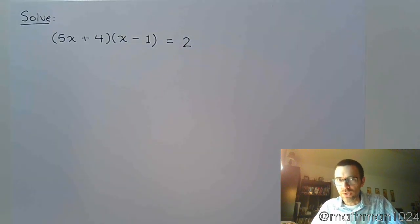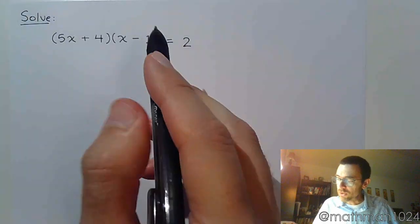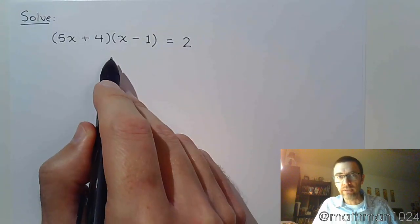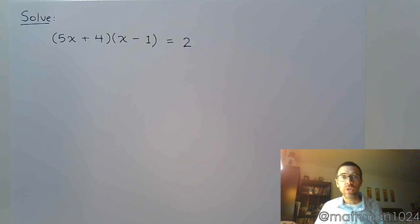We need that product to equal zero, so we've got to do something with that two. There is no two factor theorem. There's two factor authentication, but that's something totally different. We've got to have this equal to zero. Well, here's the problem that a lot of students run into. If you try to move the two from the right to the left, it's a big question of where does it go.